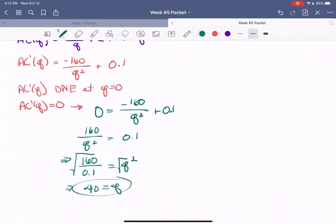So going back to my notes, this means that 40 is equal to Q. And now I would have negative 40 as well, being one of my critical points, but we wouldn't have negative number of items being made. So we can just ignore that one.